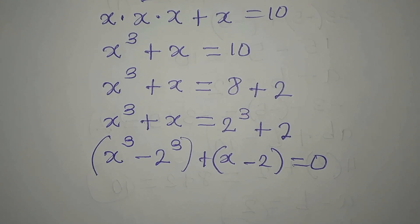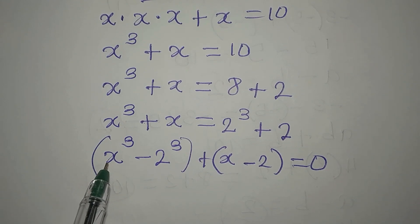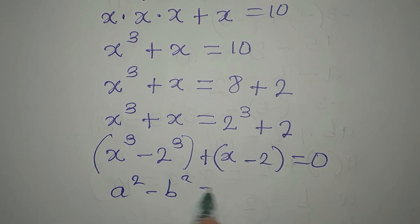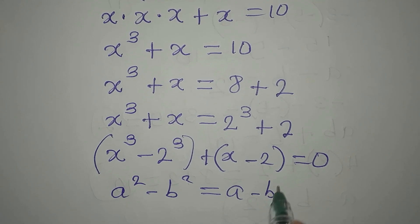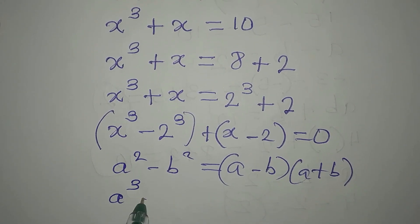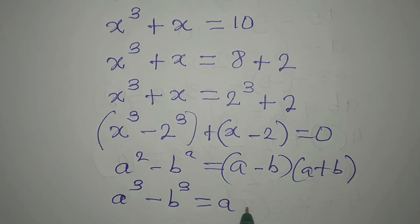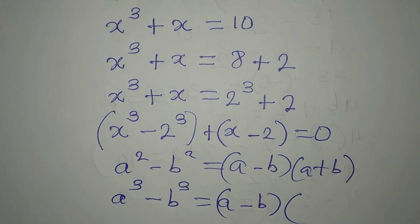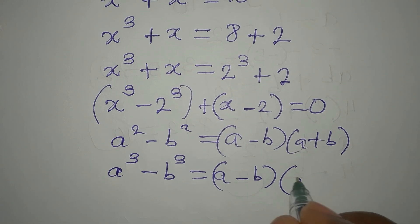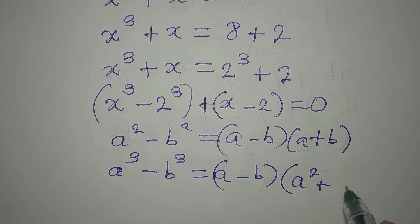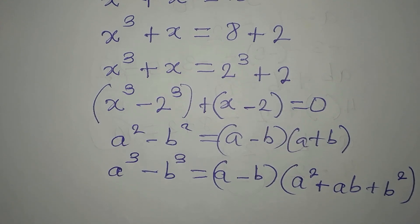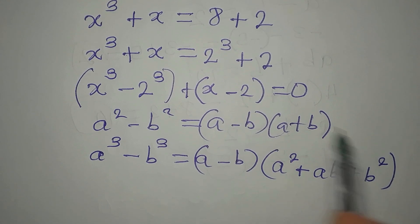Looking at the first term, we have a difference of two cubes. Just as a² minus b² equals (a minus b)(a plus b), if we have a³ minus b³, we get (a minus b) times a quadratic: a² plus ab plus b².